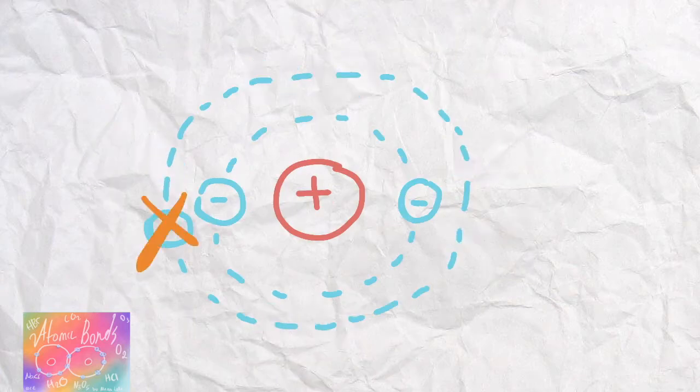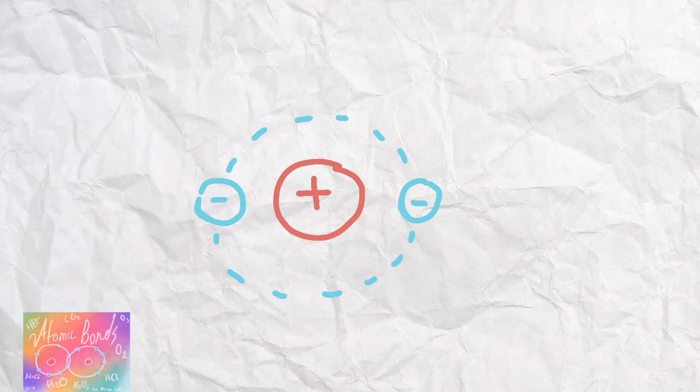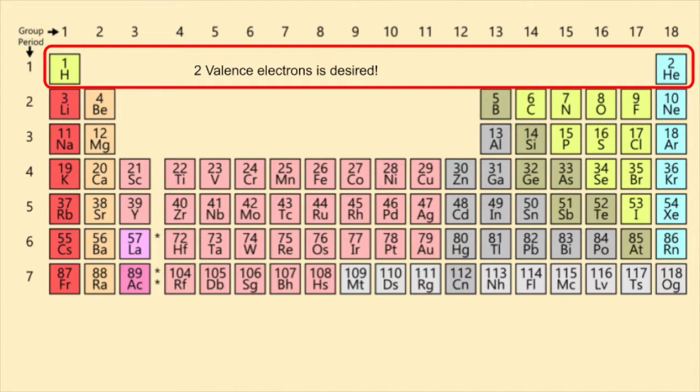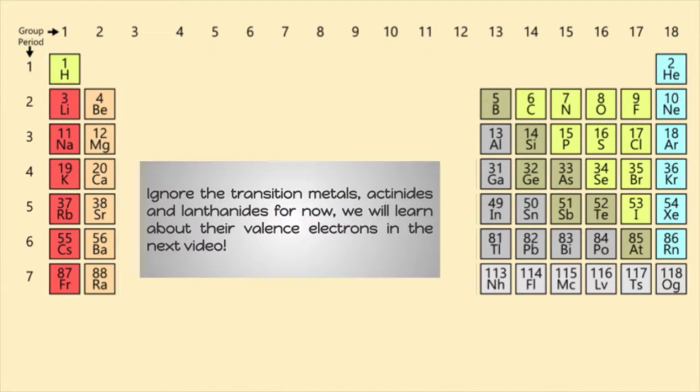As the lowest energy level, innermost shell, is filled with just two. And in the last example, we have seven and gain one. If you look at the eighth world wonder, the one and only, your majesty, the great periodic table of pure chemical elements, you will see that hydrogen and helium desire to have two valence electrons while most atoms want eight.